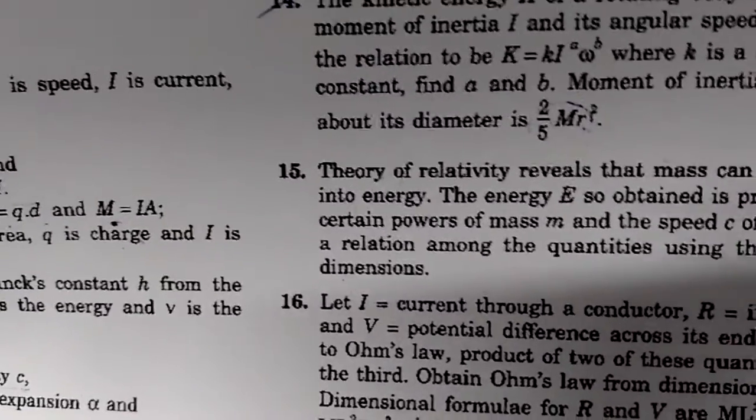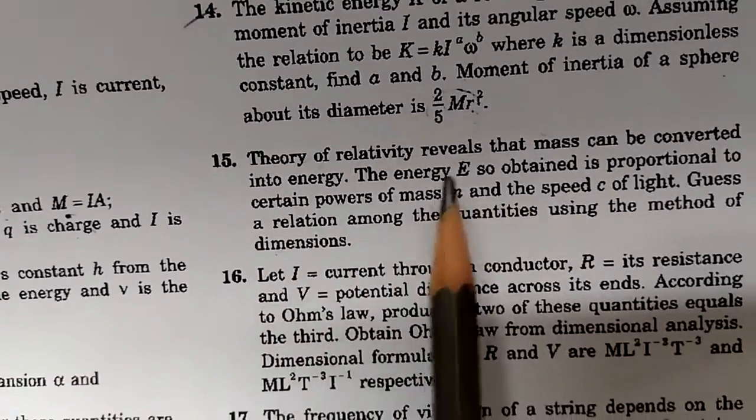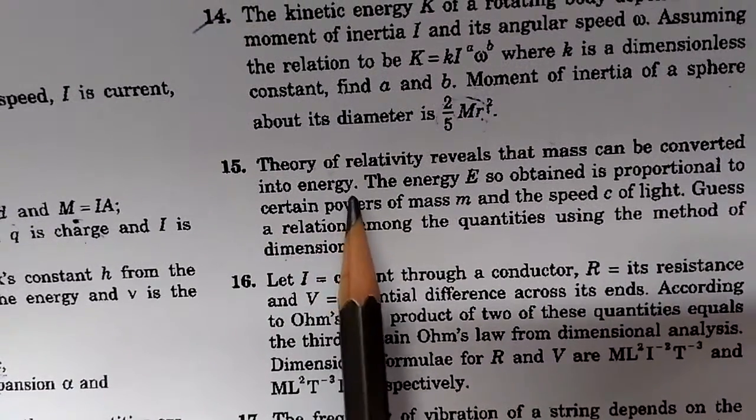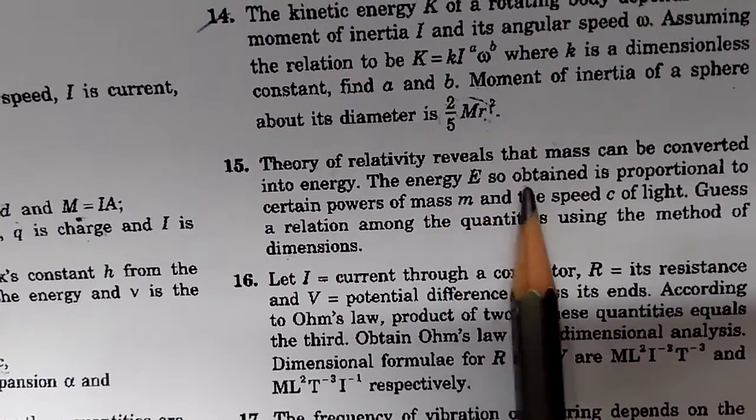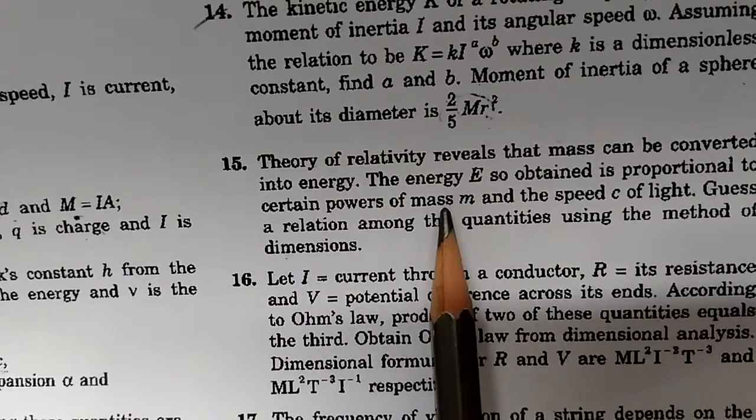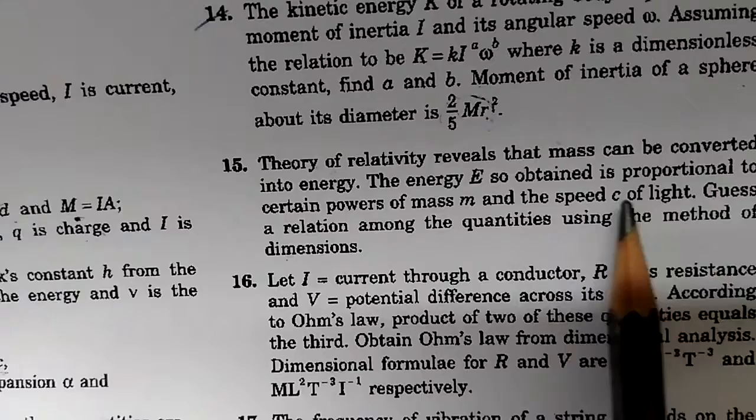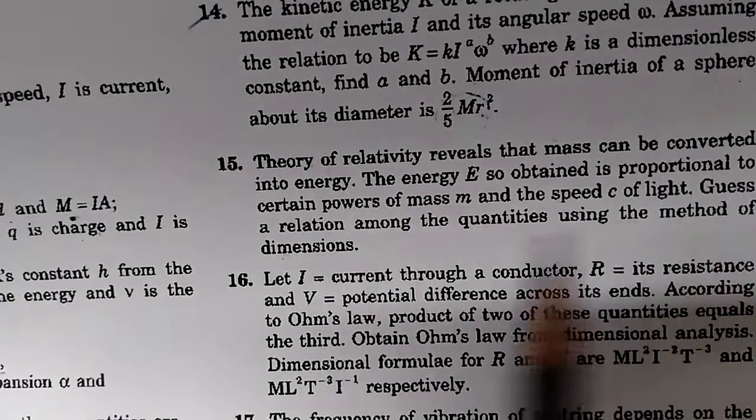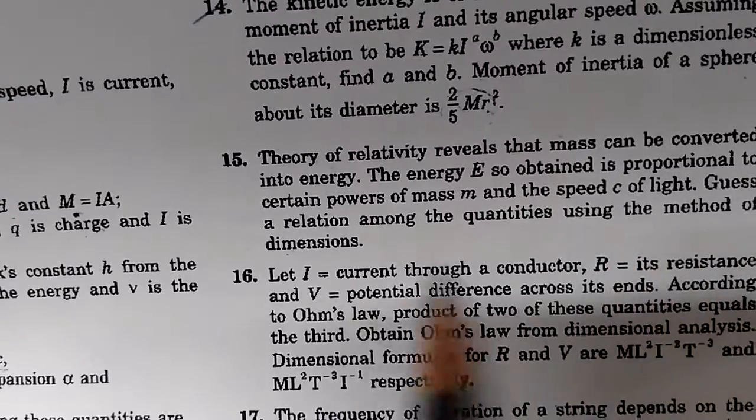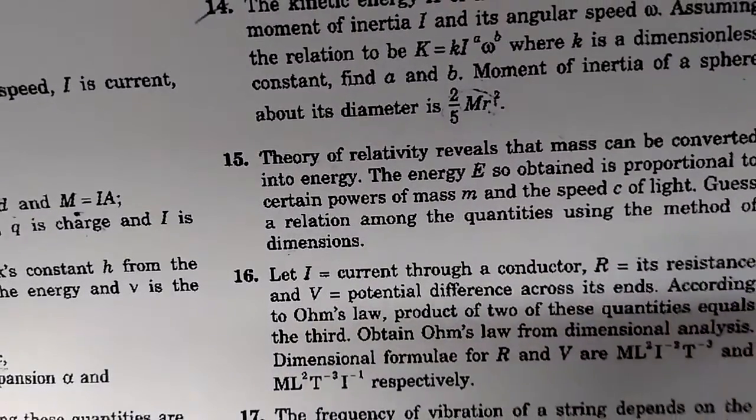Number 15. The theory of relativity reveals that mass can be converted into energy. The energy E so obtained is proportional to certain powers of M and the speed of light C. Guess a relationship among the quantities using the method of dimension.